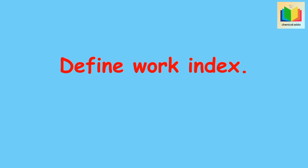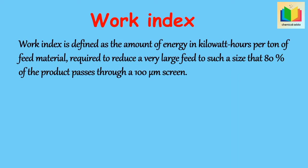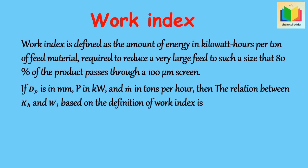Define work index. Work index is defined as the amount of energy in kilowatt-hours per ton of feed material required to reduce a very large feed to such a size that 80 percent of the product passes through a 100 micrometer screen. If Dp is in mm, P in kilowatts, and ṁ in tons per hour, then the relation between Kb and Wi based on the definition of work index is: Kb = √(100 × 10⁻³) × Wi = 0.3162 × Wi.